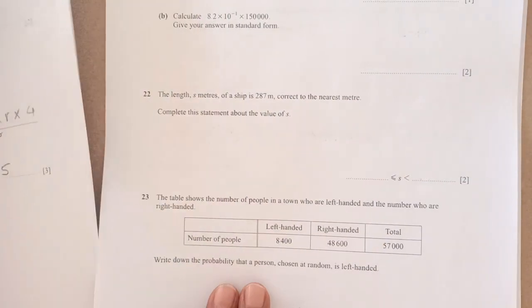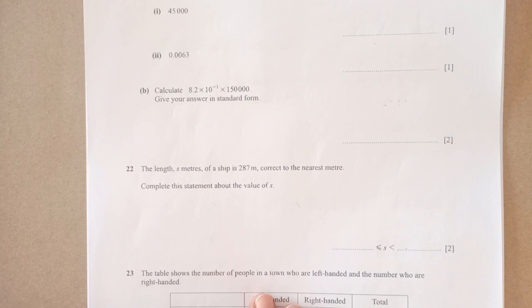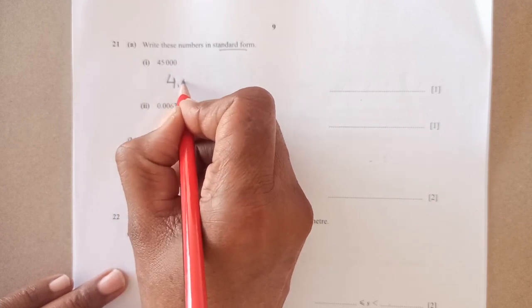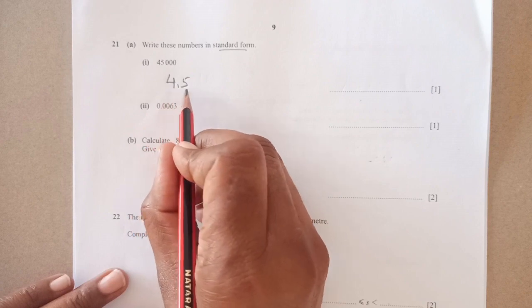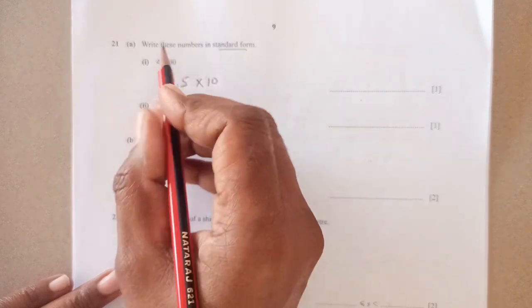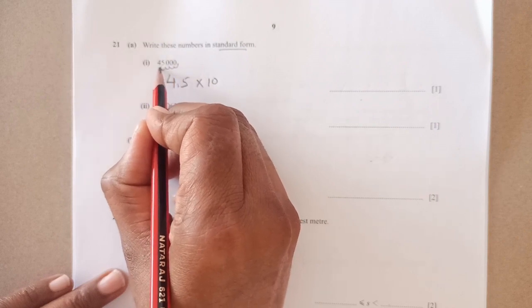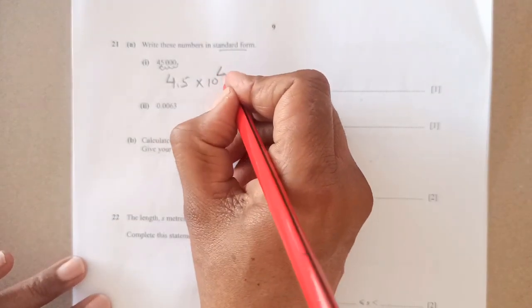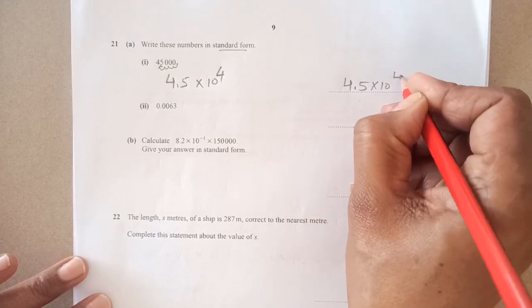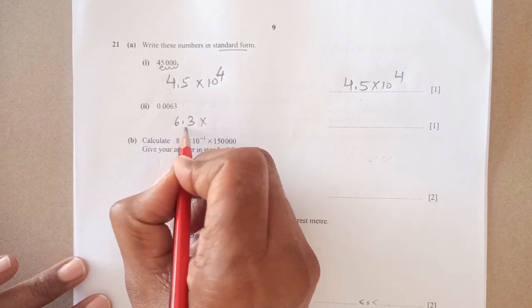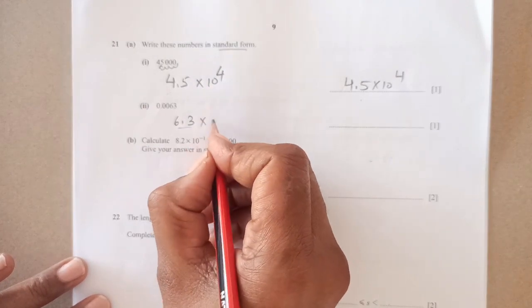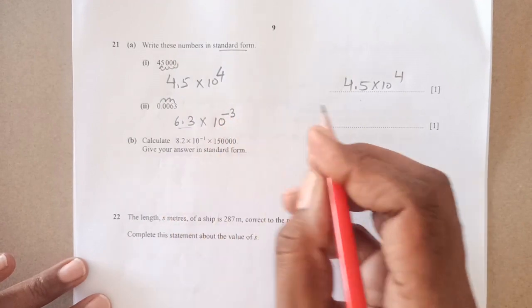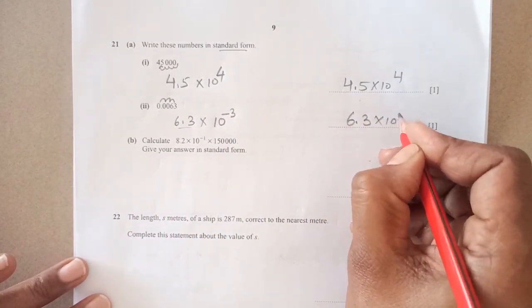Number 21: write these numbers in standard form. For 45,000, in standard form the number should be between 1 and 9, so 4.5 times 10 raised to power - decimal is shifting 4 digits to the left, so positive 4. For 0.0063, it should be 6.3 times 10 raised to power - shifting decimal 3 places to the right, so negative 3: 6.3 times 10 to power minus 3.